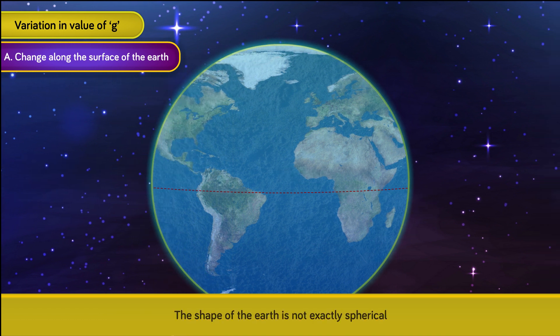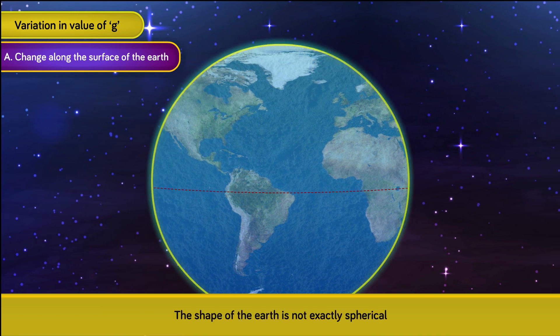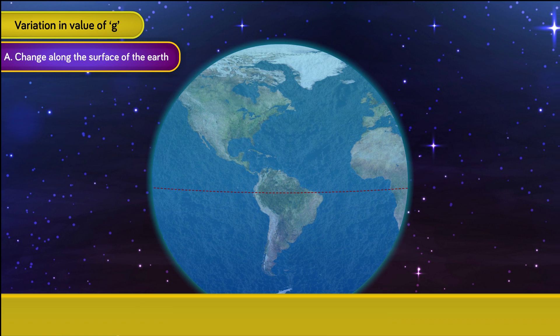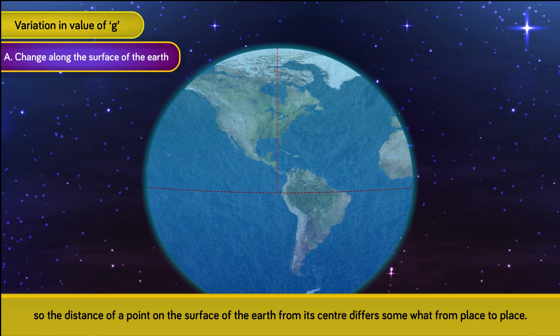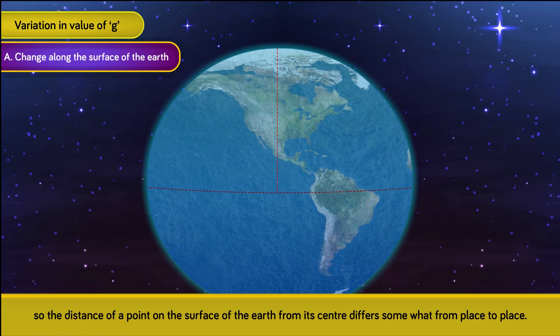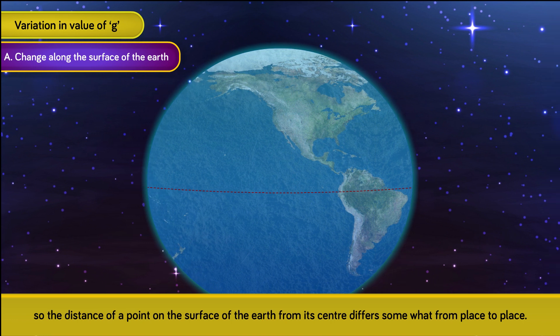The reason is that the shape of the Earth is not exactly spherical, and so the distance of a point on the surface of the Earth from its center differs somewhat from place to place.